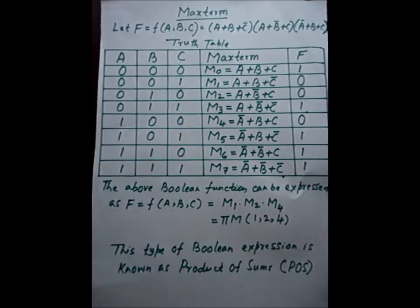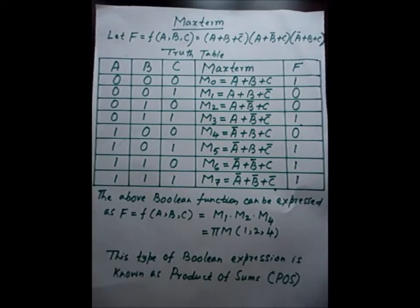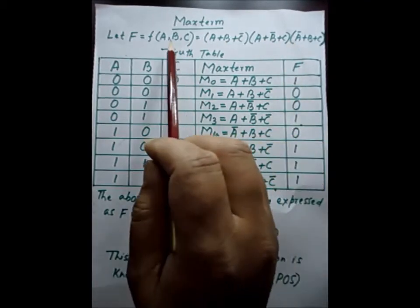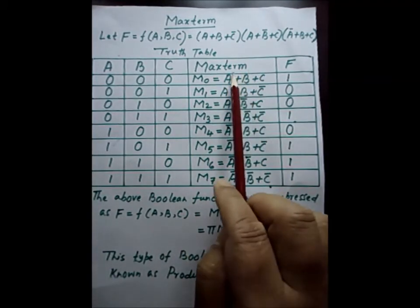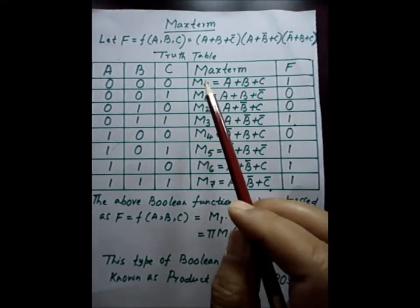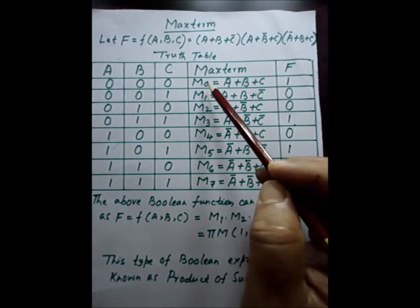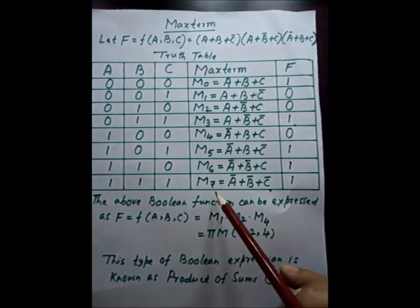Now we come to the maxterm. A maxterm is denoted by capital M of i, and it is a sum of n variables where each variable is complemented if assigned to 1. We will take a function similarly and explain it. The truth table of that function is shown, and we have kept a column for maxterms. Since there are 3 variables, it will be capital M0 to M7, so there are a total of 8 maxterms.